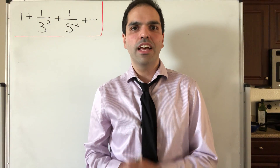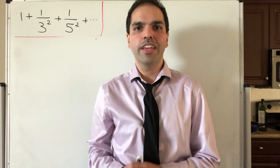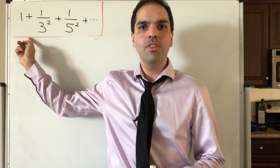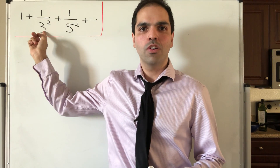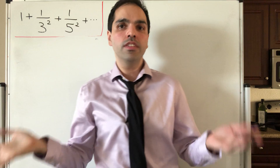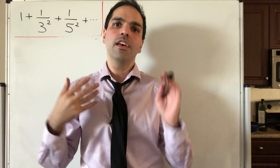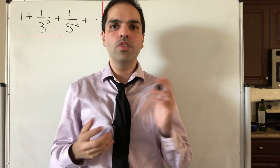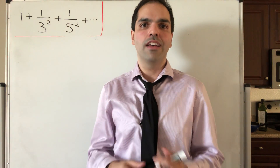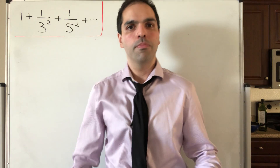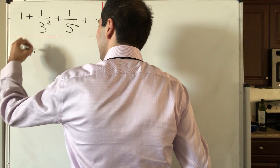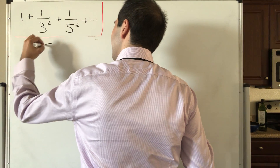Thanks for watching. Today I would like to show you how to calculate the sum of 1 plus 1 over 3 squared plus 1 over 5 squared, etc., using two ways: one by doing it directly, the other one by using Basel's formula. Let me first show you the direct method, because it's very fun.